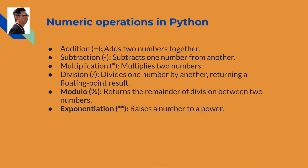Addition: adding numbers together. Subtraction: subtract one number from another. Multiplication: multiply the numbers between two numbers. Division: divide one number by another, returning a floating point result — what we call a floating point decimal.